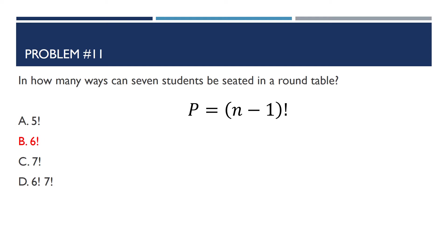By the way, what's permutation? Permutation is an arrangement of objects where the order matters. So if you say 1, 2, 3, it's different from 3, 2, 1. It's also different from combination — in combination, the arrangement 1, 2, 3 and 3, 2, 1 are just the same, because they are just the same set of objects composed of 1, 2, and 3.